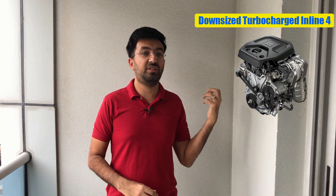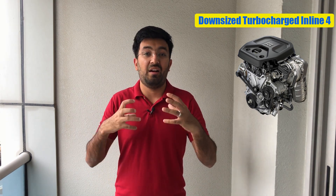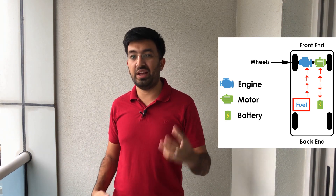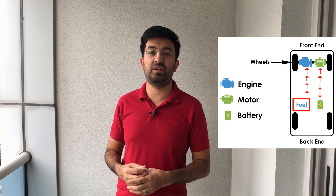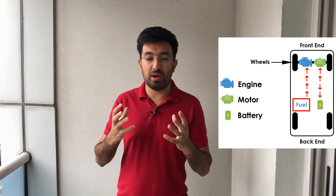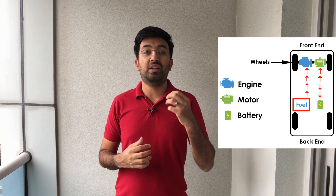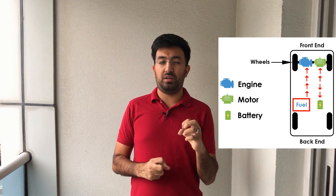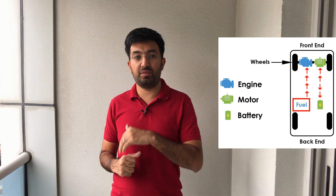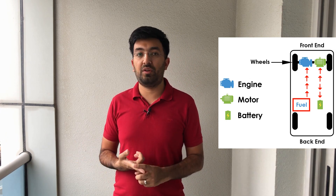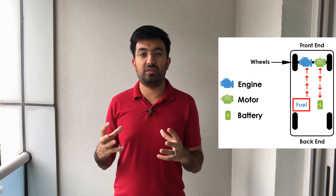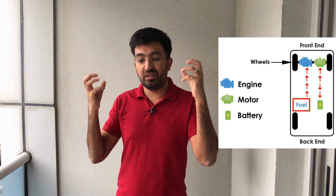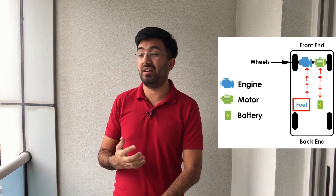The most ideal solution compared to the downsized engine and the NA engine are hybrid cars. For example, a one liter EcoBoost engine mated to electric motors and a battery pack gives you the same amount of power — in fact more — and the electric motors provide more torque initially, solving the turbo lag problem. The whole package also fits into a very small volume.